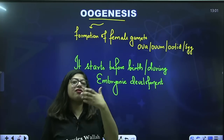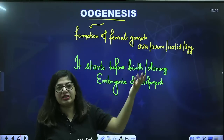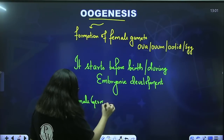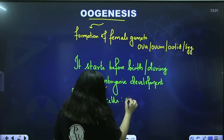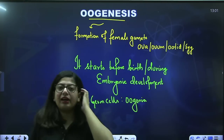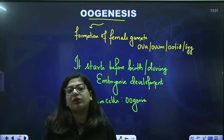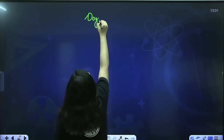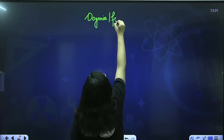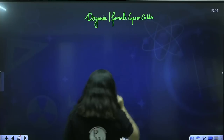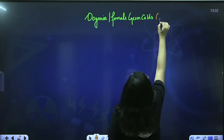Just like in males we have spermatogonia as male germ cells, we also have female germ cells known as oogonia. So let's first understand the process of oogenesis. In females we have oogonia or female germ cells. These oogonia or female germ cells are diploid.